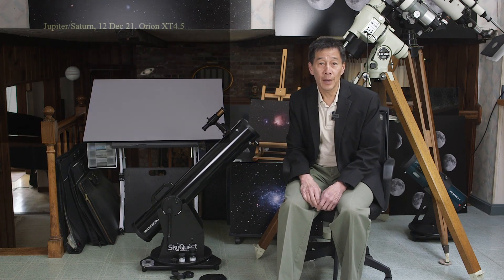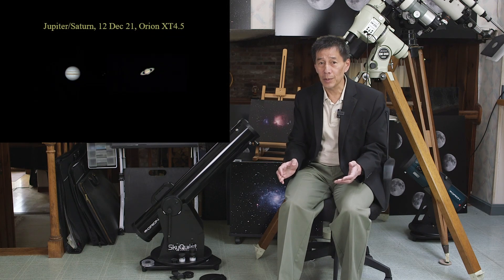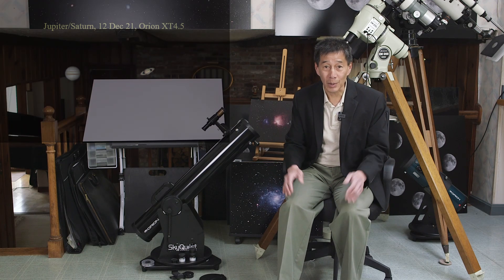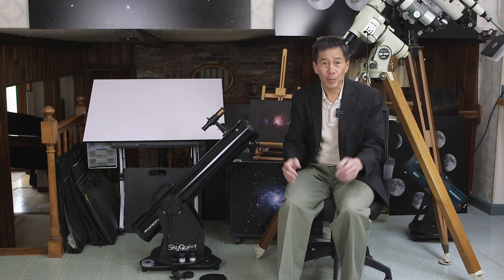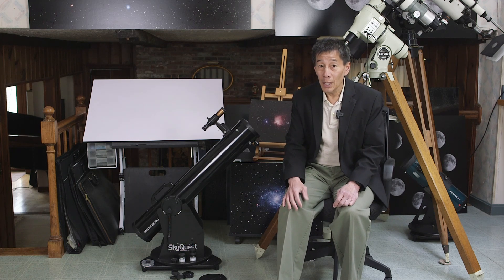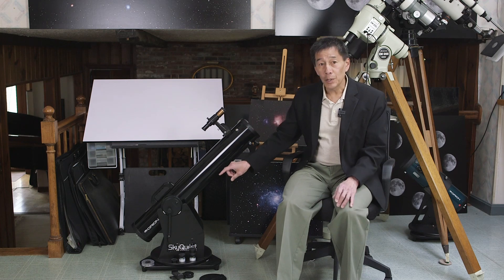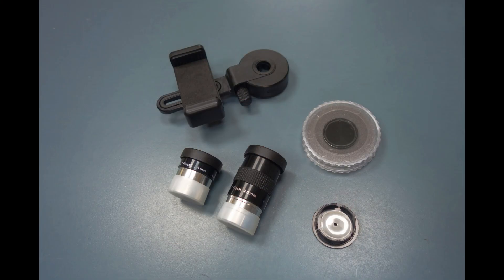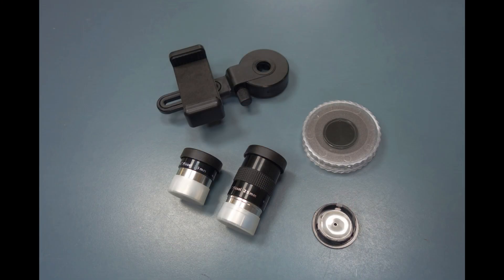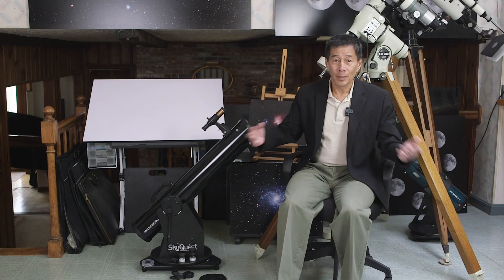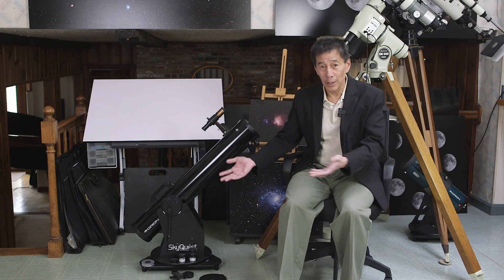This one was given to me by a very kind person who requested that I give it to a youngster. So if we can try to stay in those parameters, that would be great. It comes complete with a 25- and 10-millimeter Orion Sirius Plossel, and he has also added a moon filter and a smartphone adapter. I don't use those things, but if you want to try, go ahead.